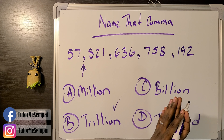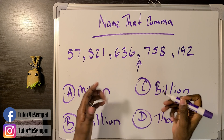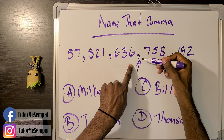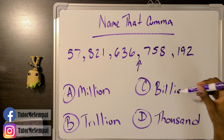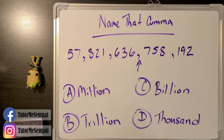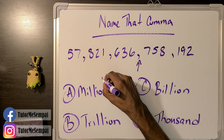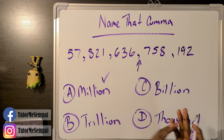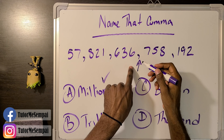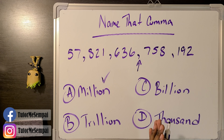One more. What is going to be the name of this comma right here? Is it A, million; B, trillion; C, billion; or D, thousand? If you said A, million, you would be correct. This is your million comma.